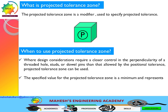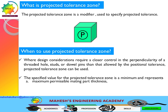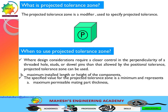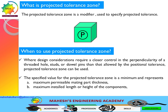The specified value for the projected tolerance zone is a minimum and represents the maximum permissible mating part thickness, or the maximum installed length or height of components such as screws, studs, dowel pins, or bushes.